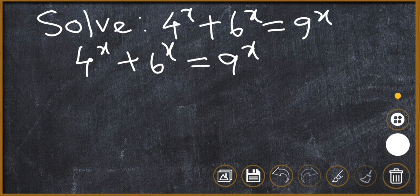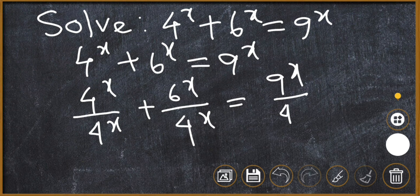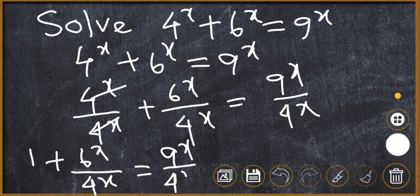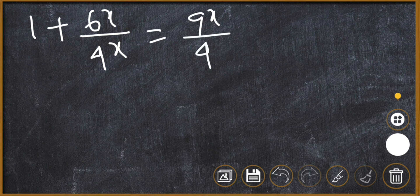First, we divide the equation by 4 to the power x. So 4^x over 4^x plus 6^x over 4^x is equal to 9^x over 4^x. This simplifies to 1 plus 6^x over 4^x is equal to 9^x over 4^x.